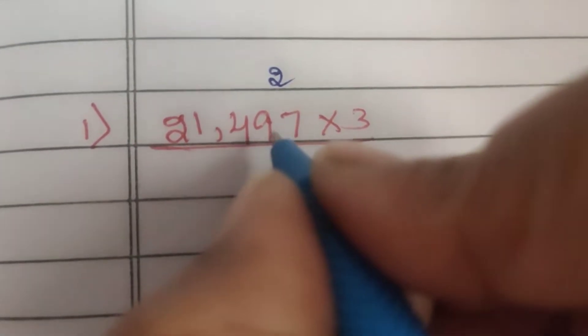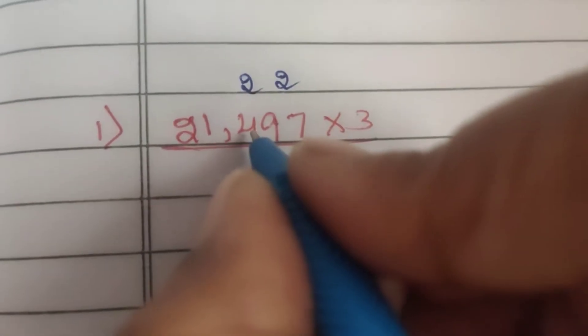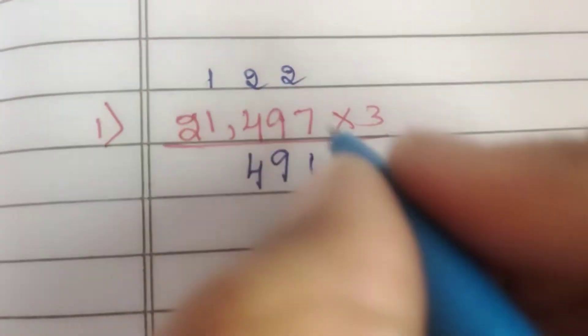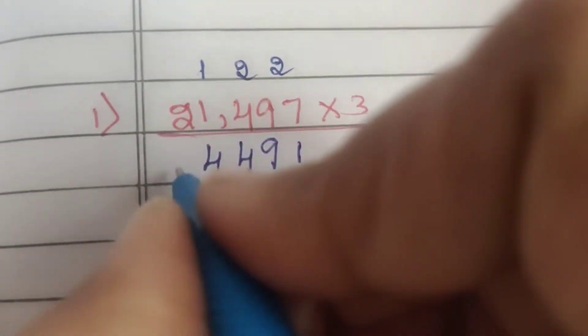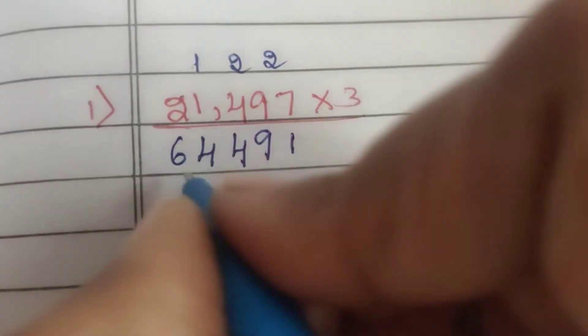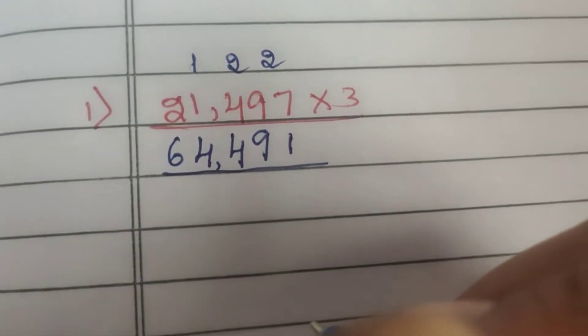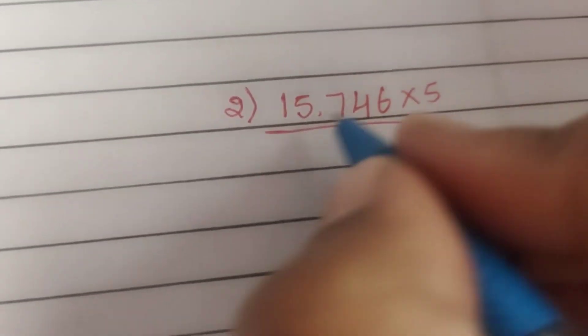3 nines are 27, 27 plus 2 is 29, so write 9 and carry 2. 3 fours are 12, 12 plus 2 is 14, so write 4 and carry 1. 3 ones are 3, 3 plus 1 is 4. 3 twos are 6. So the answer is 64,491.